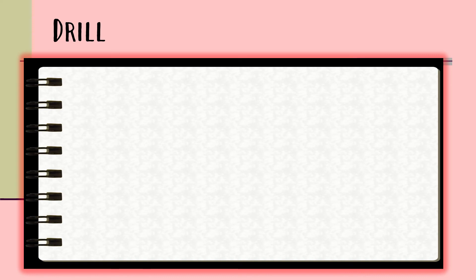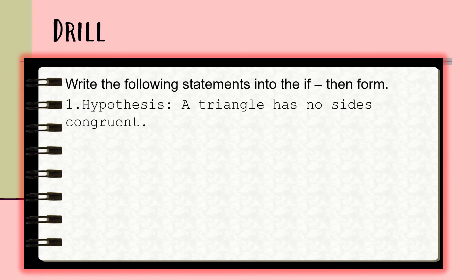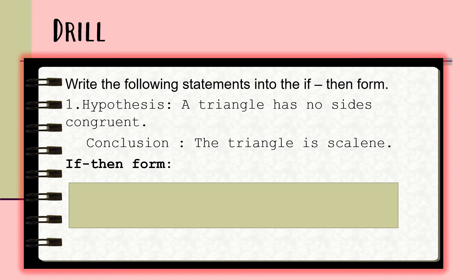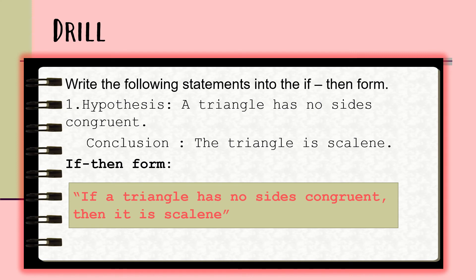Now your turn. Let us put that understanding to the test by answering the drill. Will you be able to correctly transform a conditional statement into its equivalent if-then form? You can type your answers in the comment section. For number one, the hypothesis is 'a triangle has no sides congruent,' and the conclusion is 'the triangle is scalene.' Transform this into an if-then form. If your answer is 'If a triangle has no sides congruent, then it is scalene,' then you are correct.